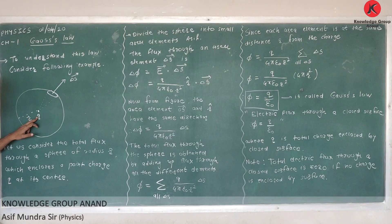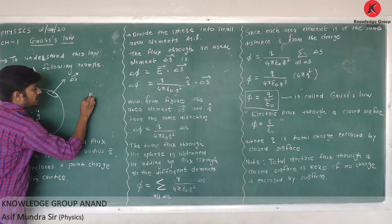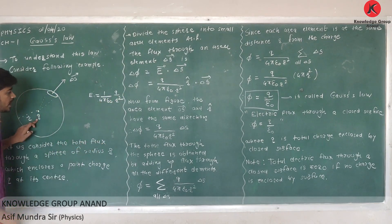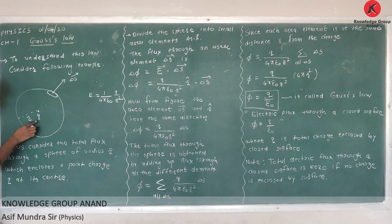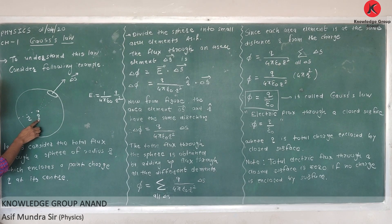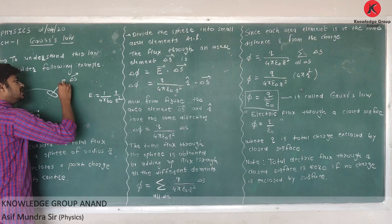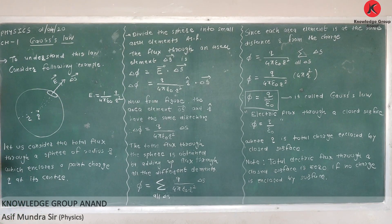Due to this point charge, the electric field at this area element — since it is a point charge — is E = (1/4πε₀) × Q/R². Why R? Because this element is on the surface, and its distance from the center is R. Since the charge is positive, the electric field points radially outward.